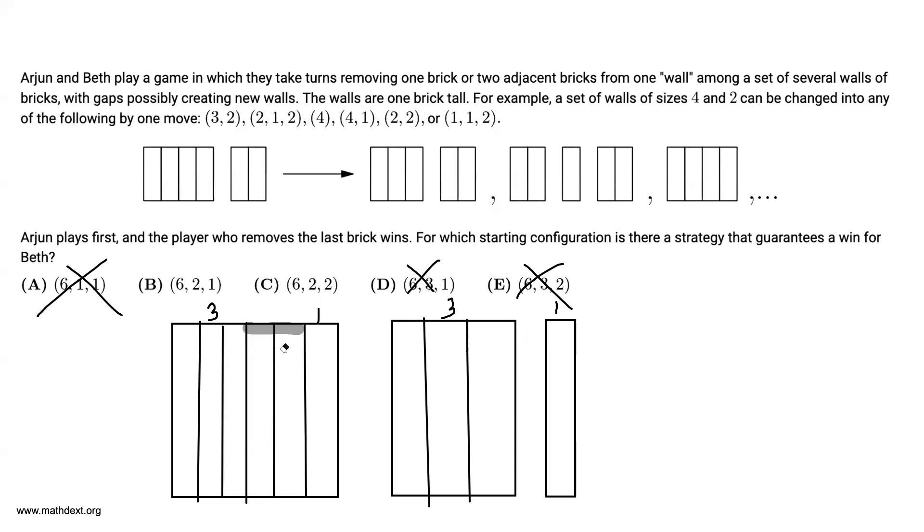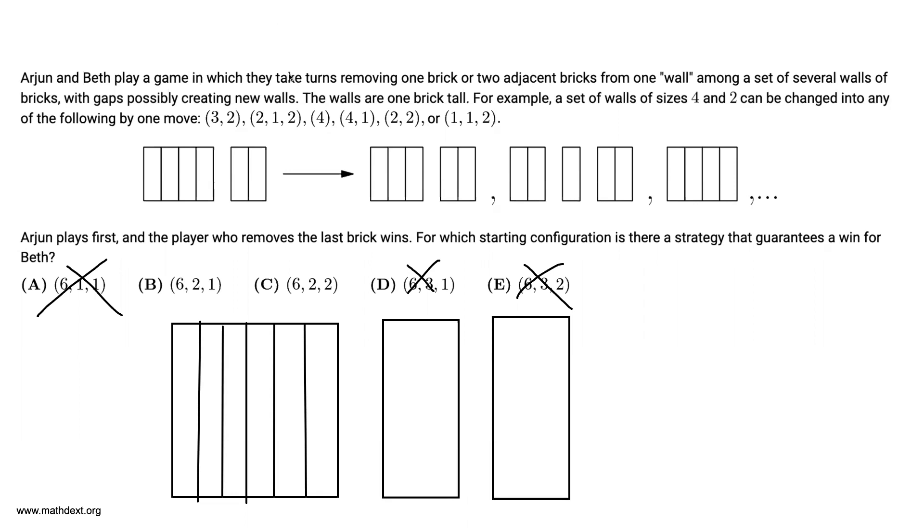And finally, let's go to answer choice C, which is 6, 2, 2. Then what Arjun can do is, if he has a 6, 2, 2 split, he can get rid of these two in the middle. And he's going to leave Beth with a 2, 2, 2, 2 split.